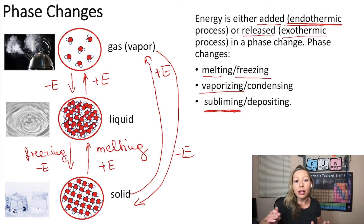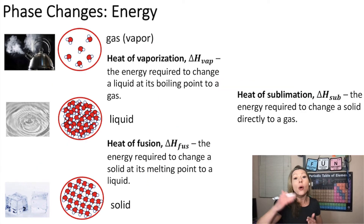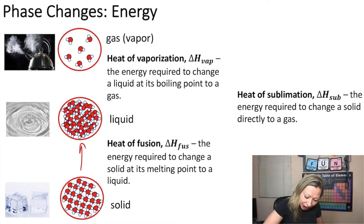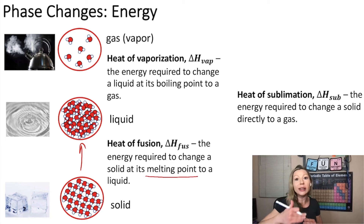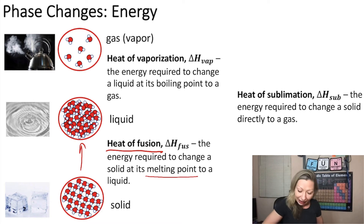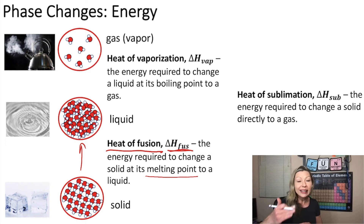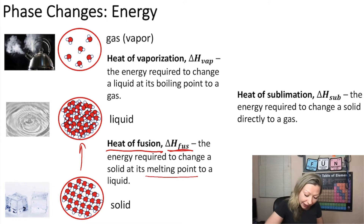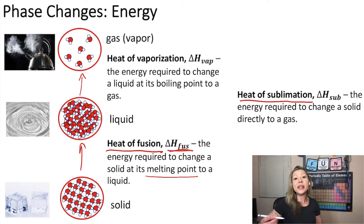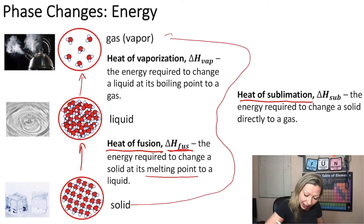Let's talk more about the energy changes. When going from a solid to a liquid phase at the melting point, the energy change is called the heat of fusion, delta H fusion. When going from the liquid to the gaseous phase at the boiling point, the energy required is called the heat of vaporization. And we also have the heat of sublimation, which is the energy required to change from a solid directly into the gaseous phase.